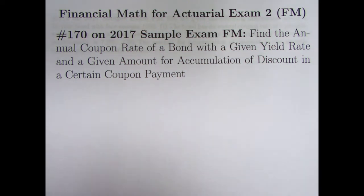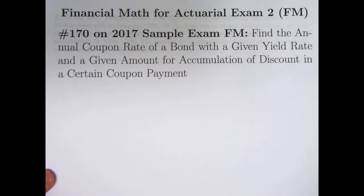In this video, we're going to solve problem 170 in Sample Exam FM from 2017, yet another problem that we can solve very efficiently and pretty quickly using the formulas that we've developed in recent videos. We will be finding the annual coupon rate of a bond that has a given yield rate and a given amount of accumulation of discount in a certain coupon payment.